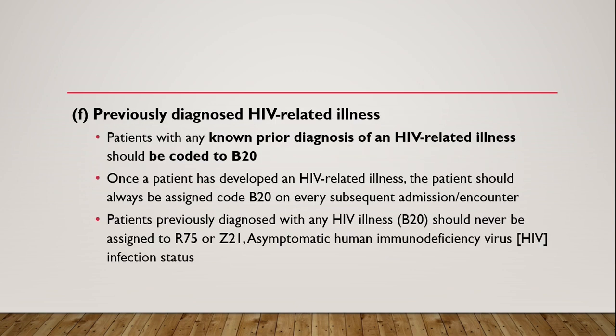Guideline Letter F: Previously diagnosed HIV-related illness. Keep in mind that a patient with any known prior diagnosis of an HIV-related illness should always be coded to B20. Once you are previously diagnosed with AIDS or HIV-related illnesses, you will forever be coded as B20 — unless a cure is discovered. They can never be coded with Z21, R75, or anything else. Once previously diagnosed with HIV-related conditions or AIDS, it is always B20.